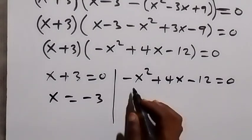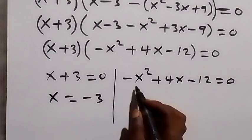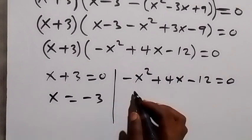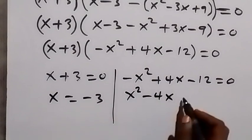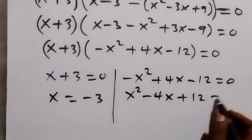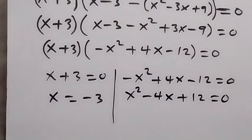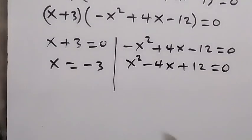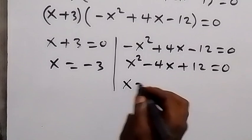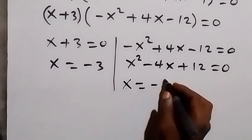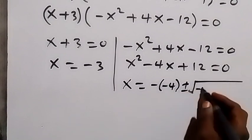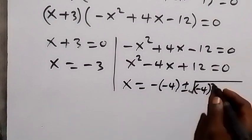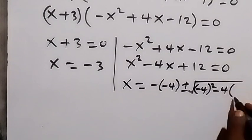Now let's get the other values of x from the quadratic equation. Let's multiply through by minus, and this becomes x squared minus 4x plus 12 equals 0. Solving this quadratic equation using the quadratic formula, x equals minus b — that's minus minus 4 — plus or minus square root of b squared minus 4ac, where a is 1 and c is 12, over 2a.